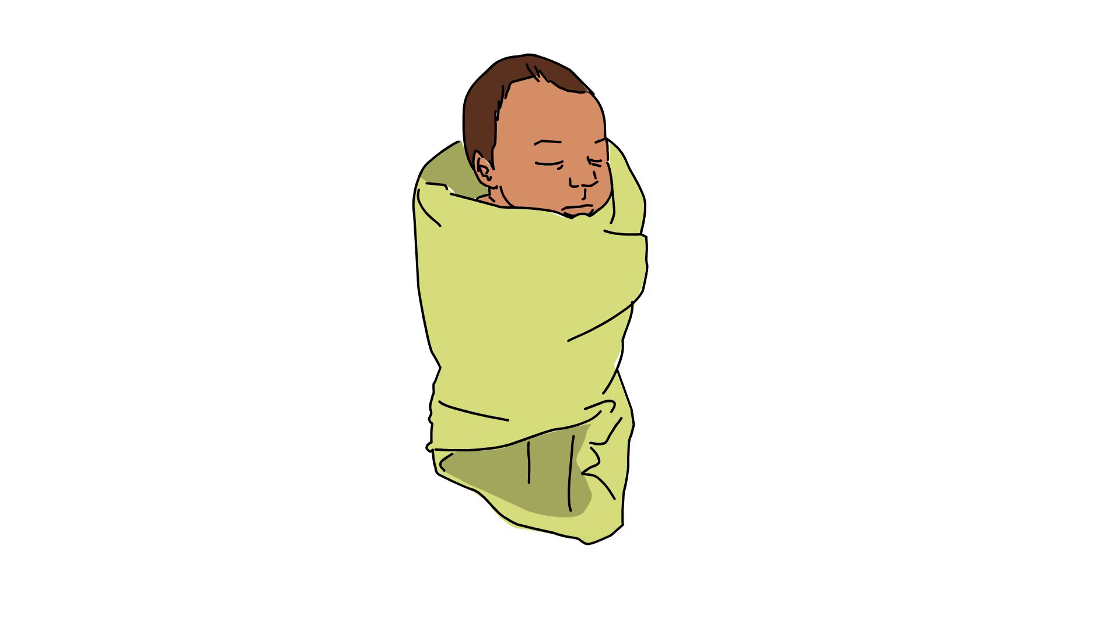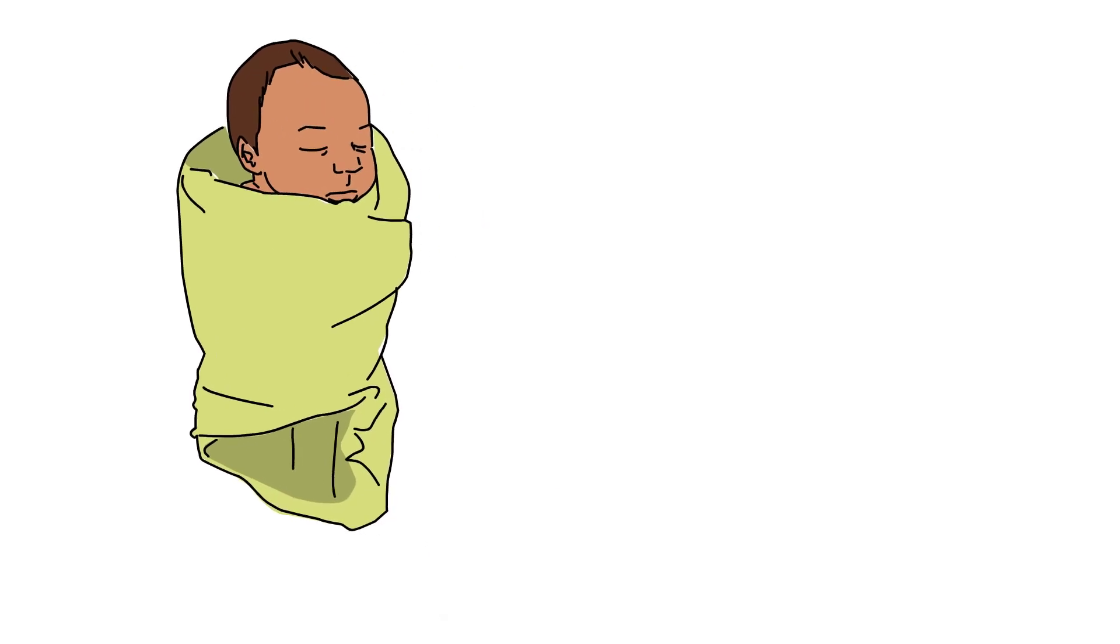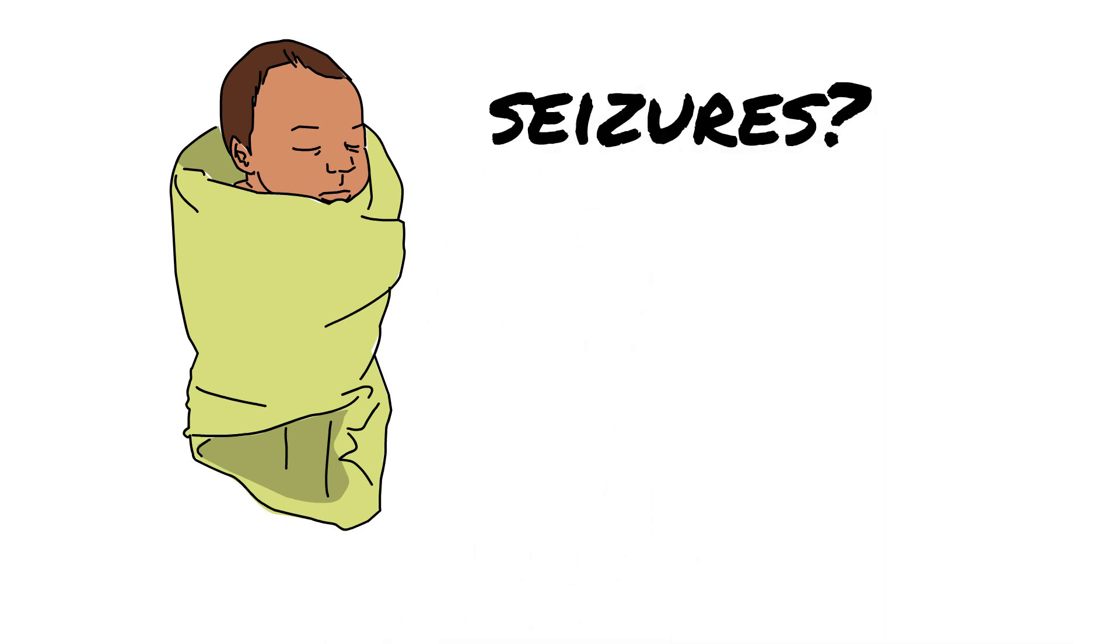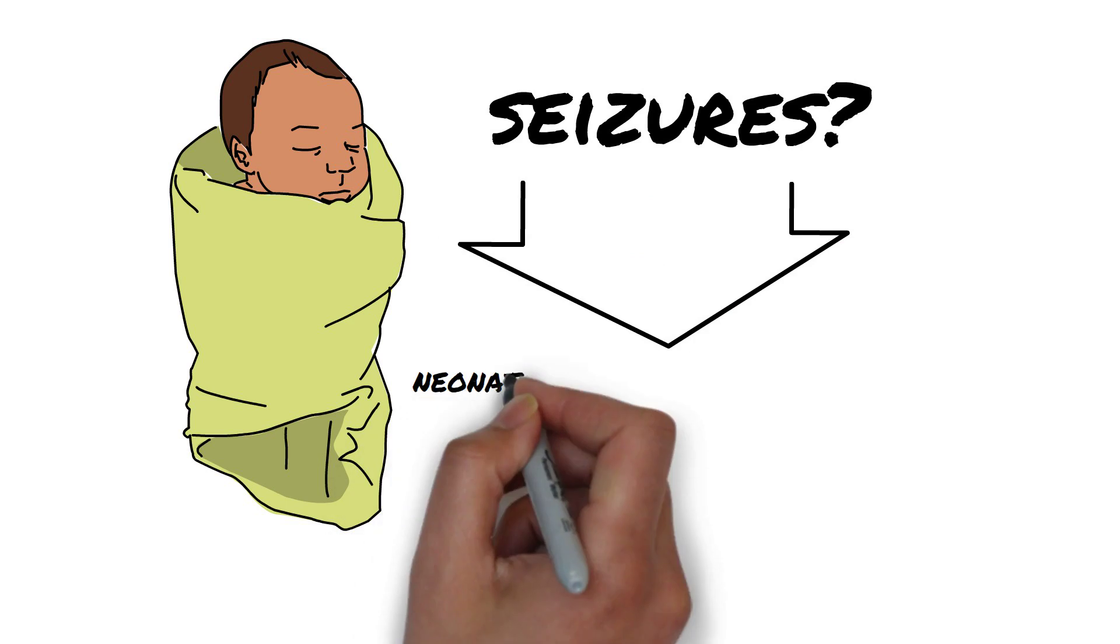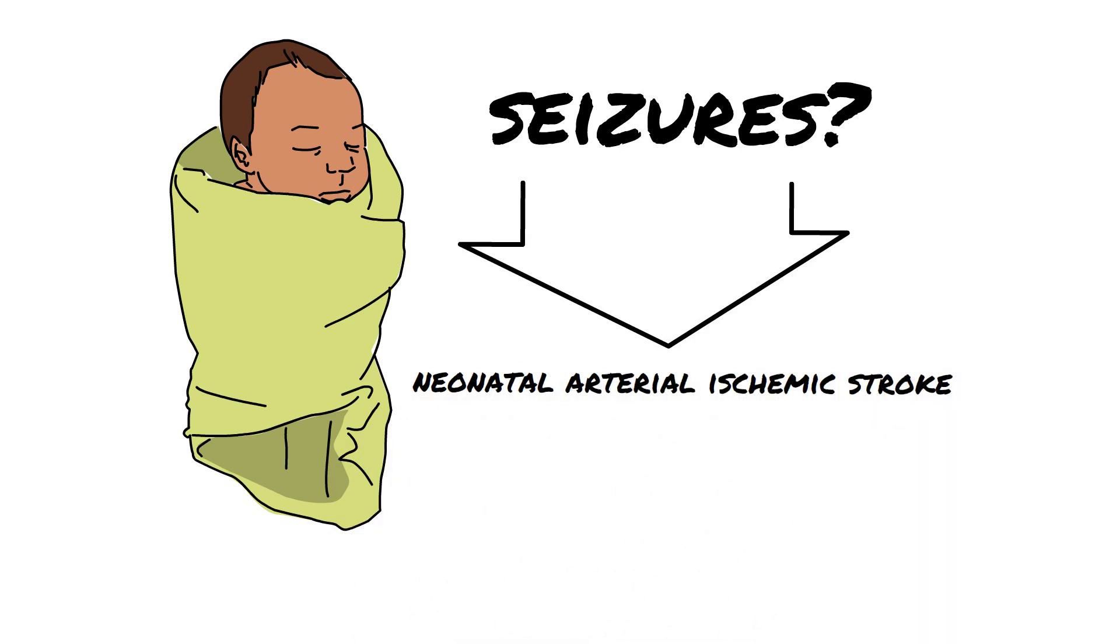Kate's MRI showed that she had an arterial ischemic stroke. If the stroke is believed to have happened around the time of birth and presents with symptoms such as seizures in the first 28 days of life, this is called a neonatal arterial ischemic stroke or NAIS for short.